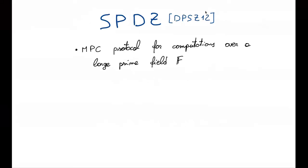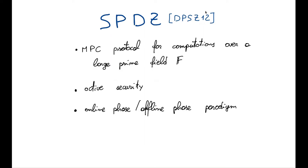SPEEDS is an efficient multiparty computation protocol for computations over a large prime field F, and it achieves active security by relying on the online phase/offline phase paradigm. Specifically, we have this input-independent pre-processing phase called the offline phase, where the parties generate large amounts of correlated material. Later on, in the online phase, the parties use this correlated randomness to compute the output of their function securely, without revealing any information about the inputs.